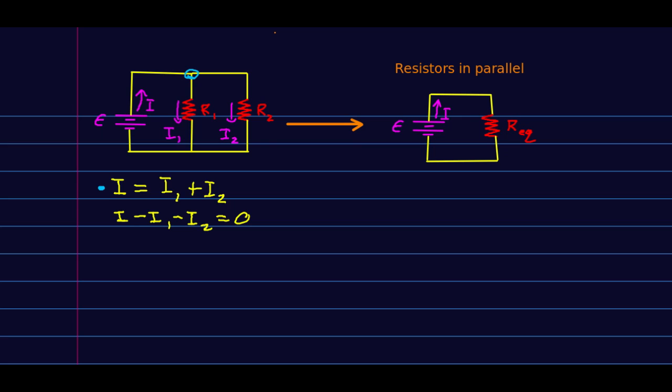Now I'm going to do the loop law, and I have three loops that I could imagine walking around. I could walk around this loop, I could walk around this loop, or I could walk around this loop. It's going to turn out that I do not need all three of those loops to be able to solve this circuit, but I'm going to write down all three anyway because there are several points to make. So I'm going to start with the orange loop.